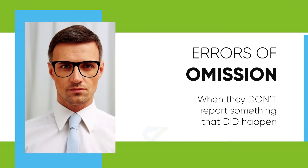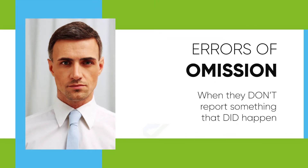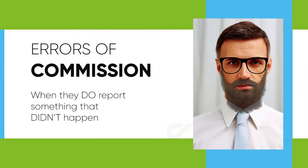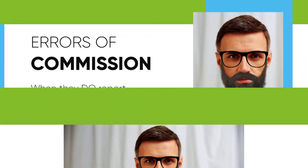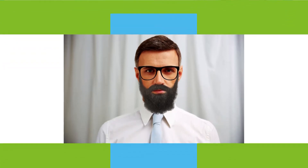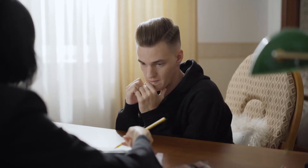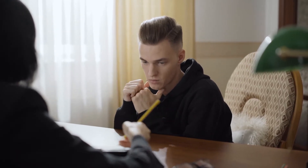People can make errors of omission, which is when they don't report something that did happen. People can also make errors of commission, which is when they do report something that didn't happen. Both of these memory errors can make people's accounts inconsistent with their earlier accounts or with other known pieces of information. Memory errors are not necessarily signs of deliberate exaggeration or intention to deceive. Errors are normal and arise for many reasons, including both memory failures and poor questioning techniques. Let's look at why memory errors happen and the types of questions that minimise them.